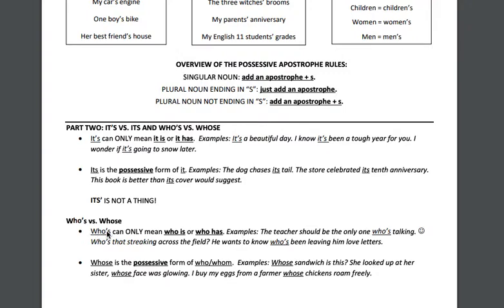Who's with an apostrophe can only mean who is or who has — for example: the teacher should be the only one who's talking. Whose without an apostrophe is the possessive form — whose sandwich is this? In other words, to whom does the sandwich belong? To check yourself with its and whose/who's, replace the word with who is or who has. If it works, you're correct. If it doesn't work, you need to use the other form.